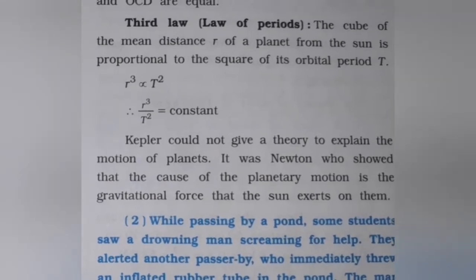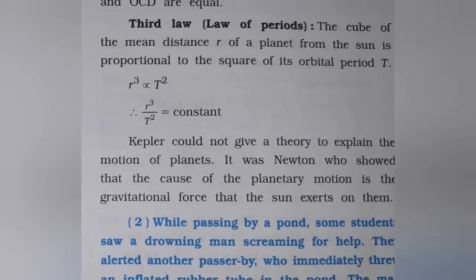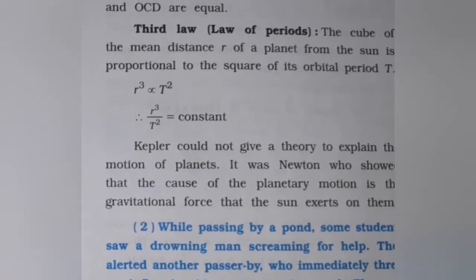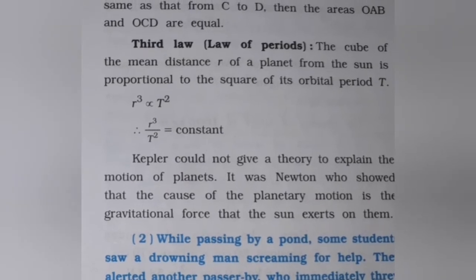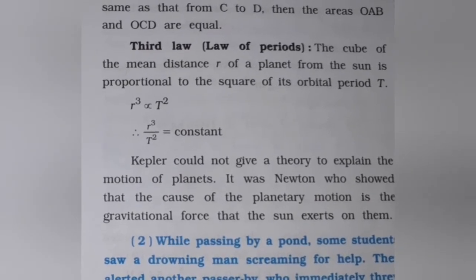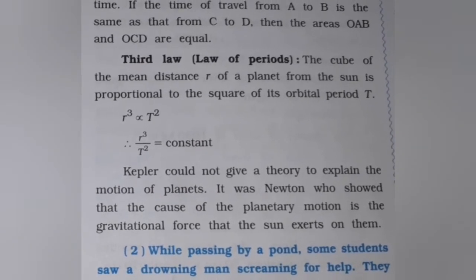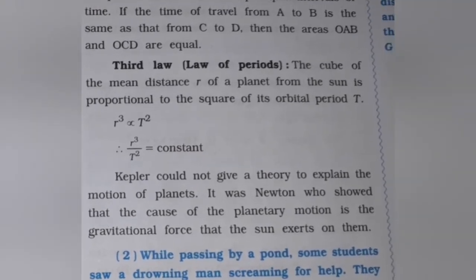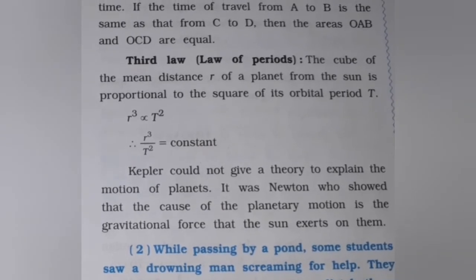Now we are going to discuss Kepler's third law of planetary motion. The cube of the mean distance R of a planet from the sun is proportional to the square of the orbital period T. That means R cubed is proportional to T squared, and therefore R cubed upon T squared is equal to a constant.